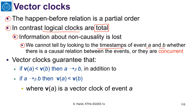Vector clocks can distinguish between causally related events and concurrent events. A vector clock guarantees that if the vector of event A is less than the vector of event B, then event A happens before event B. This is in addition to what Lamport clocks gave us: if A happens before B, then the Lamport clock of A is less than that of B.